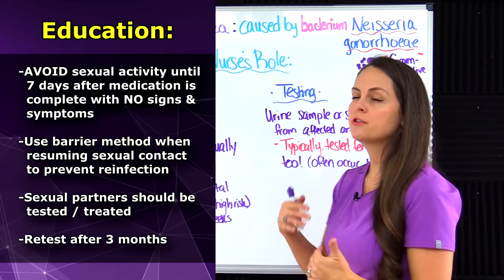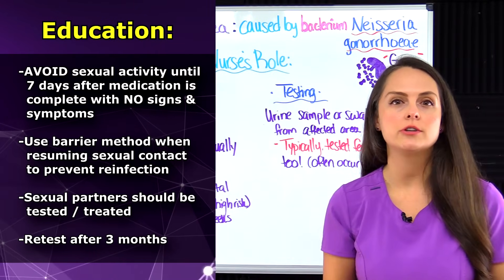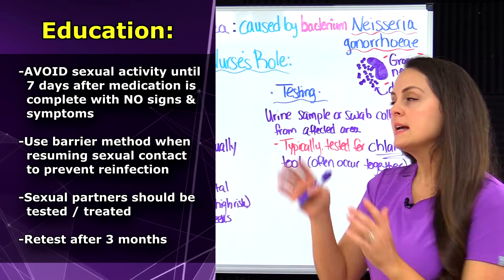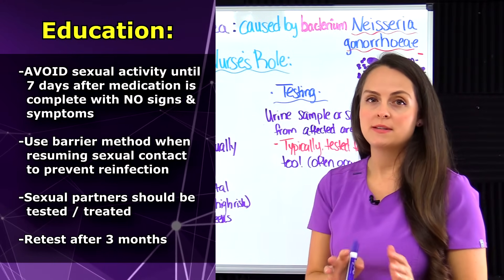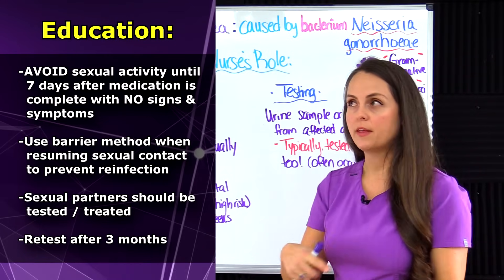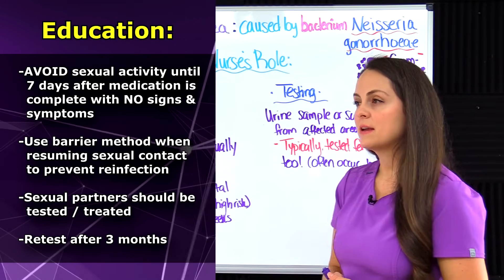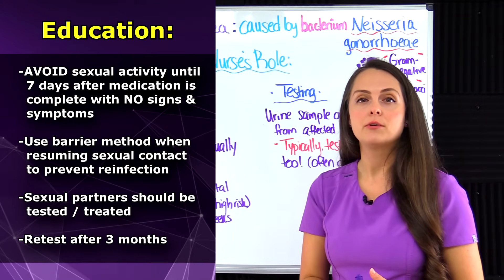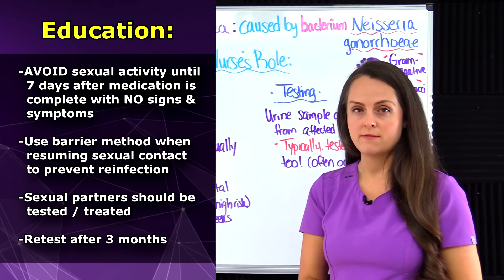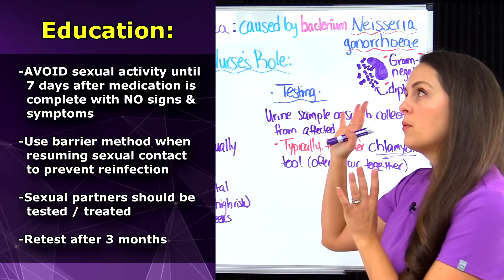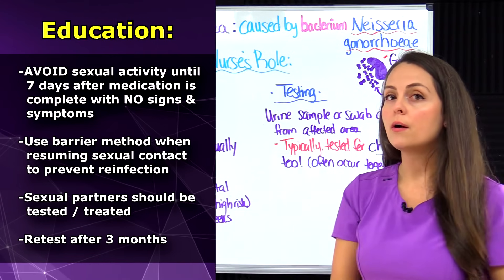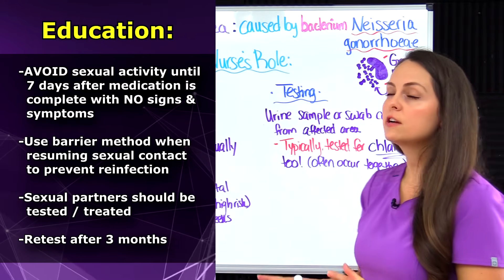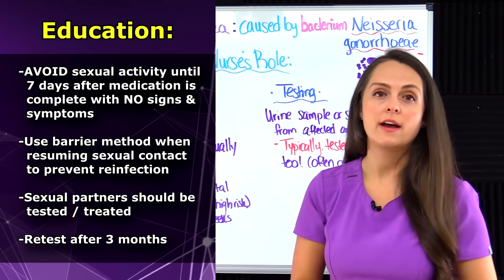In terms of patient education, tell patients receiving treatment for gonorrhea: number one, to avoid any sexual activity until seven days after all medications have been taken and they have no signs or symptoms. When they resume activity, they should use a barrier method to avoid reinfection. It is also important that their partner gets tested and treated. Once treatment is complete — for both non-pregnant and pregnant patients — they should follow up and get retested in three months to confirm the infection is gone or that they have not become reinfected.